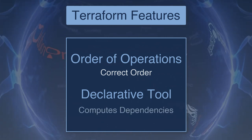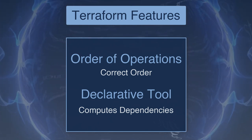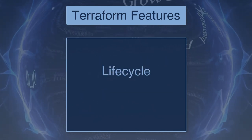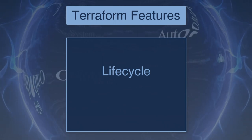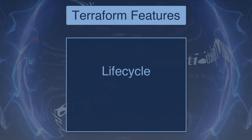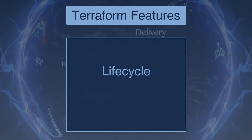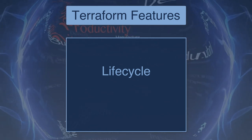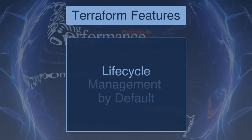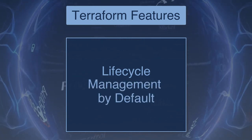As Terraform computes the dependencies between resources, it also knows which resources can be created in parallel. Many operations teams focus on creating resources to meet business needs but ignore the resource lifecycle. This can lead to stale infrastructure, which can starve resources. Terraform will keep track of infrastructure — for example, with the subnets we created with HCL a moment ago. If the code is changed, Terraform will work out which elements of the infrastructure need to be updated to make the change. Terraform includes lifecycle management as a default, so more resources are available to the teams that need them.